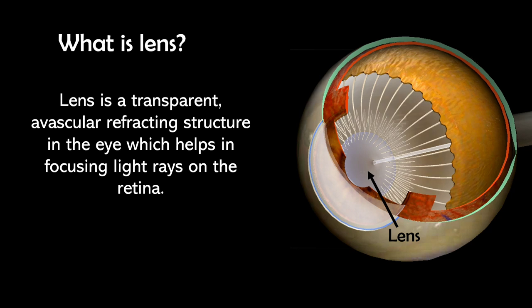Let's start with what is lens. Lens is a transparent avascular refracting structure in the eye which helps in focusing light rays on the retina. As lens takes part in refraction of light, lens should have some power.